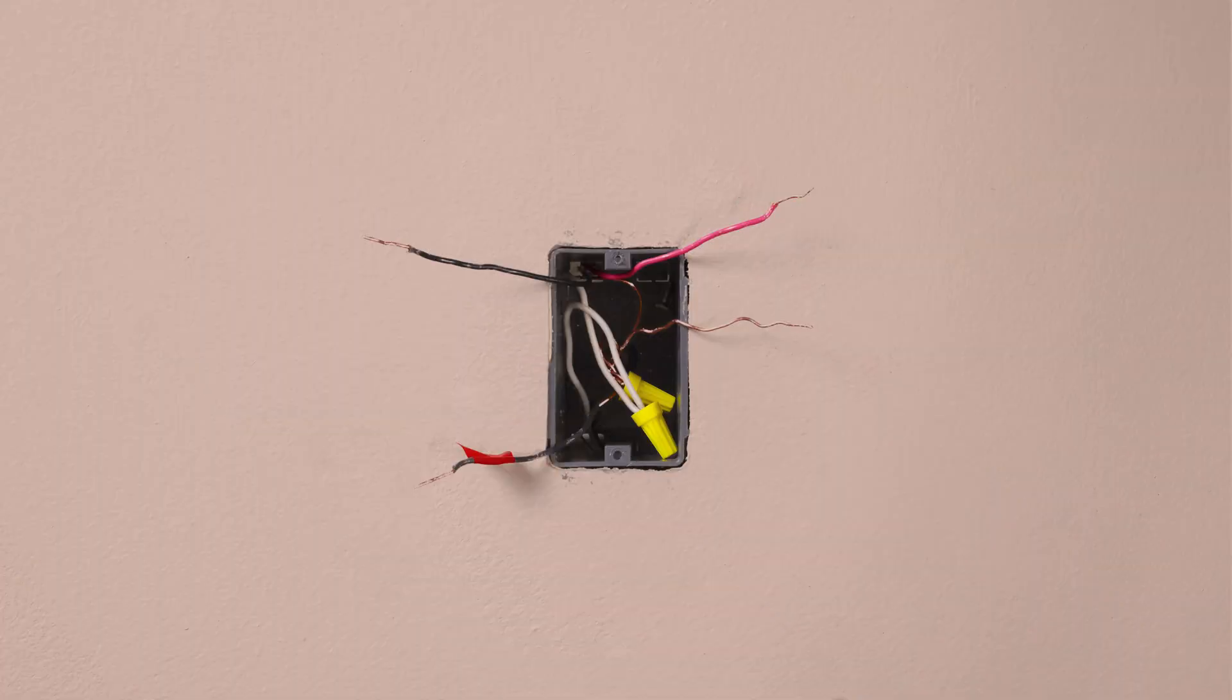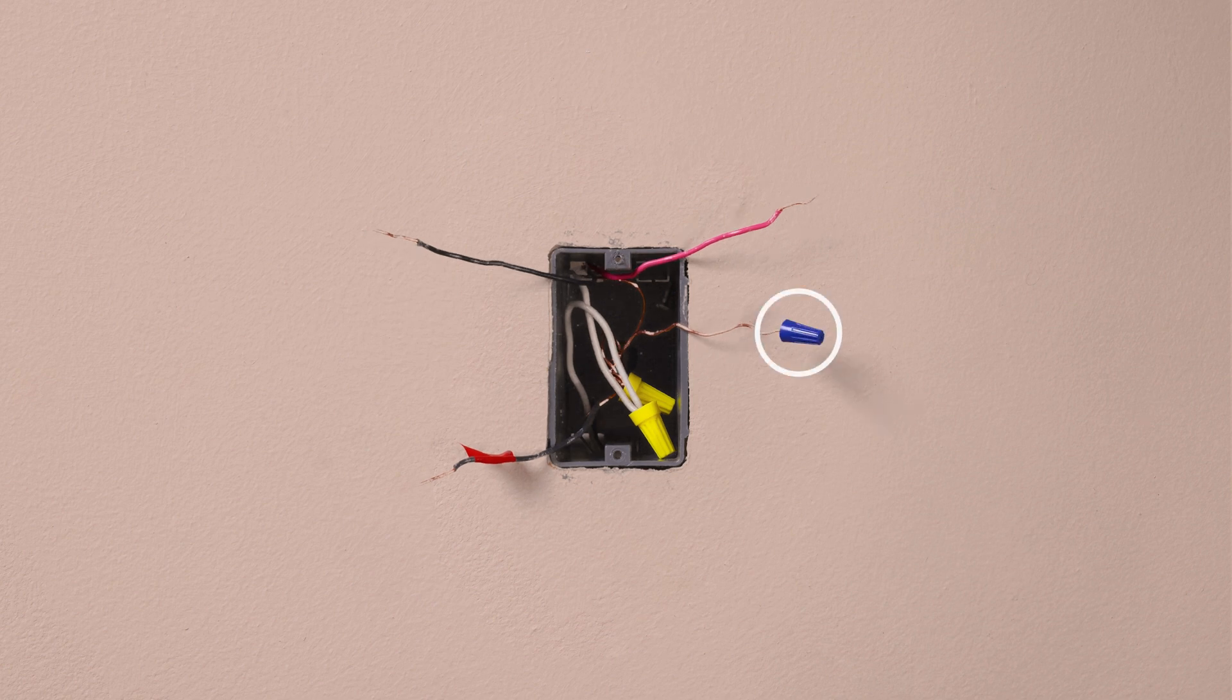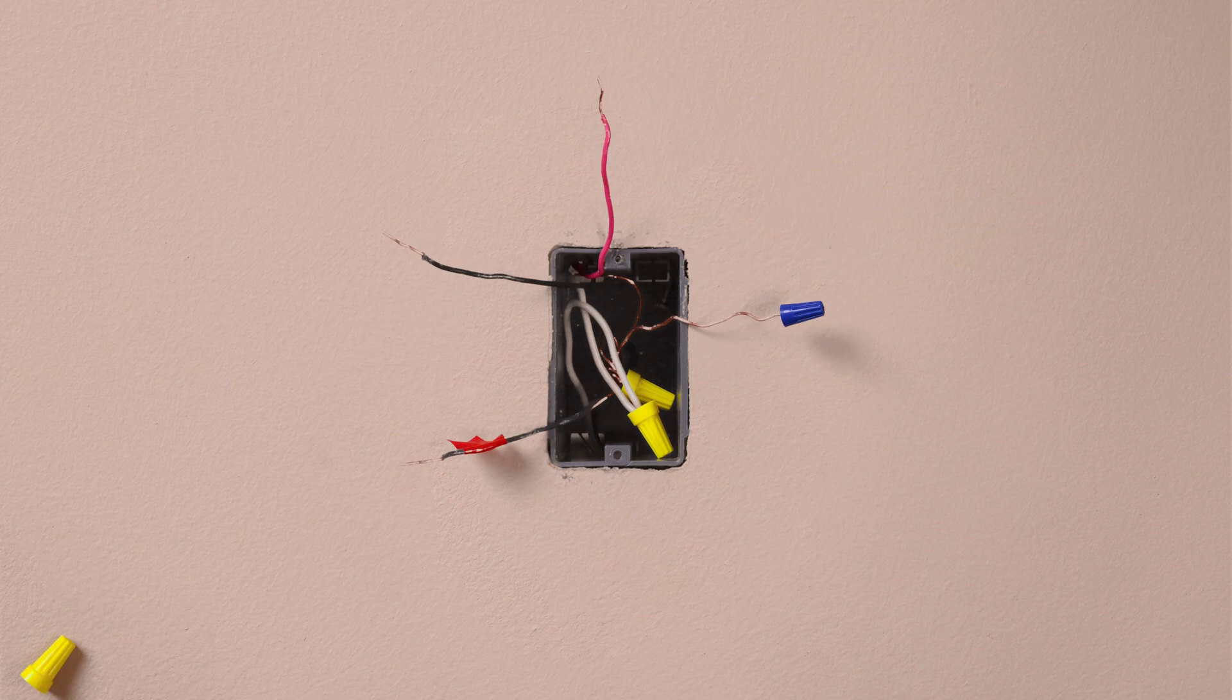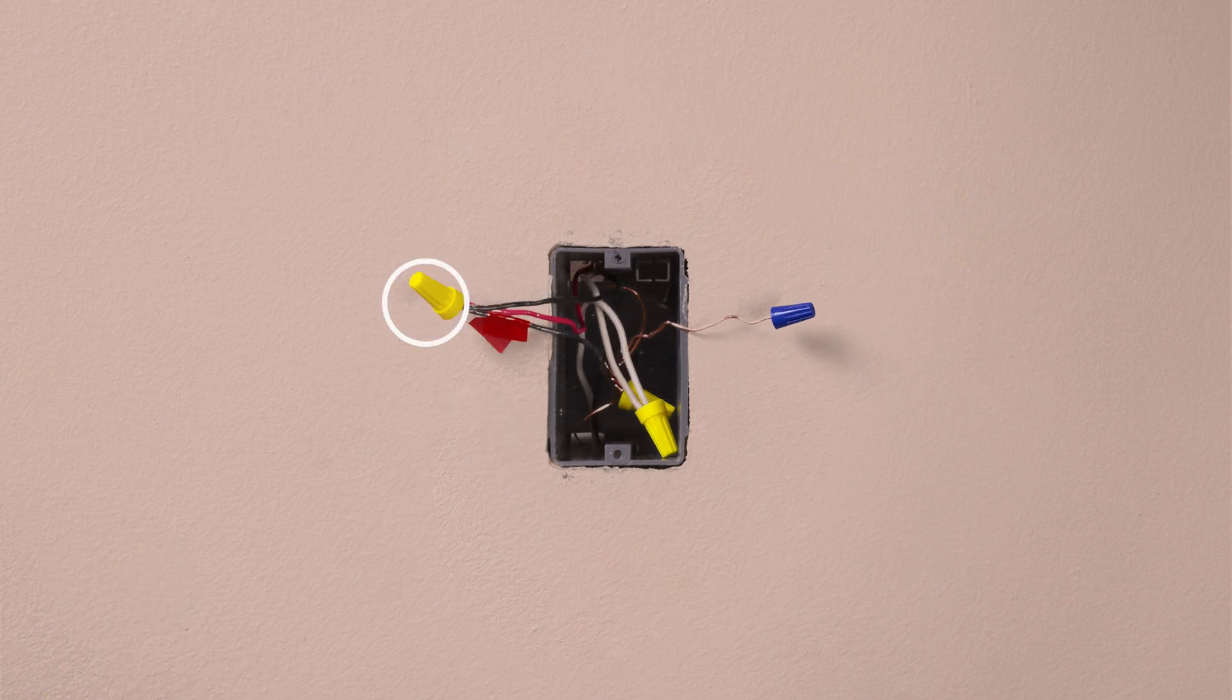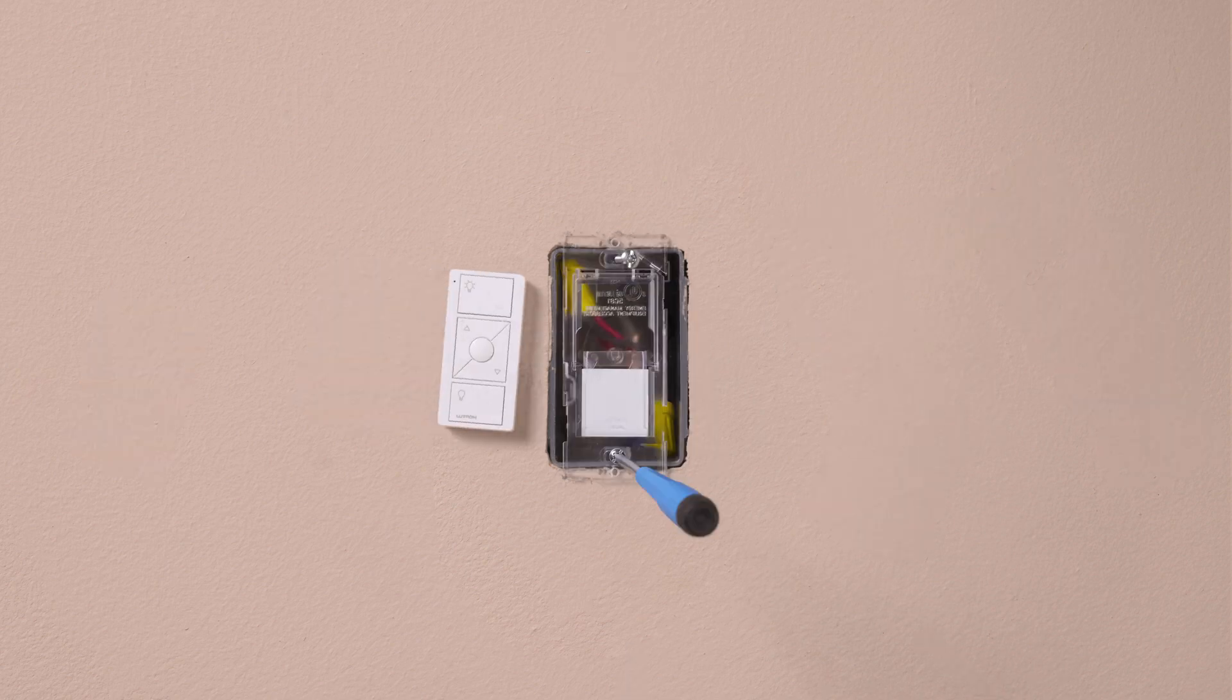Now we will install your wireless smart remote. First, cap the ground wire, typically a bare copper wire. Then connect all three wires together with a wire nut. Install the wall mount kit over the existing box.